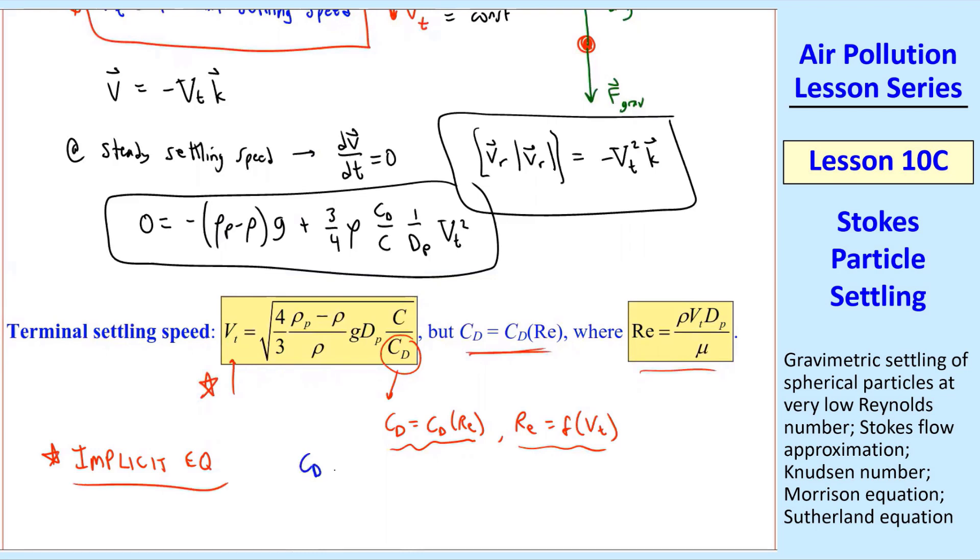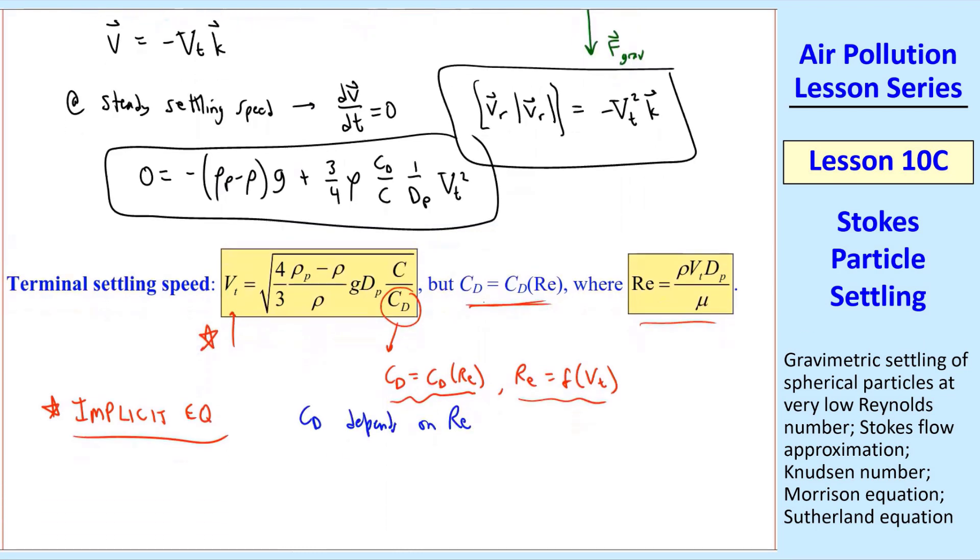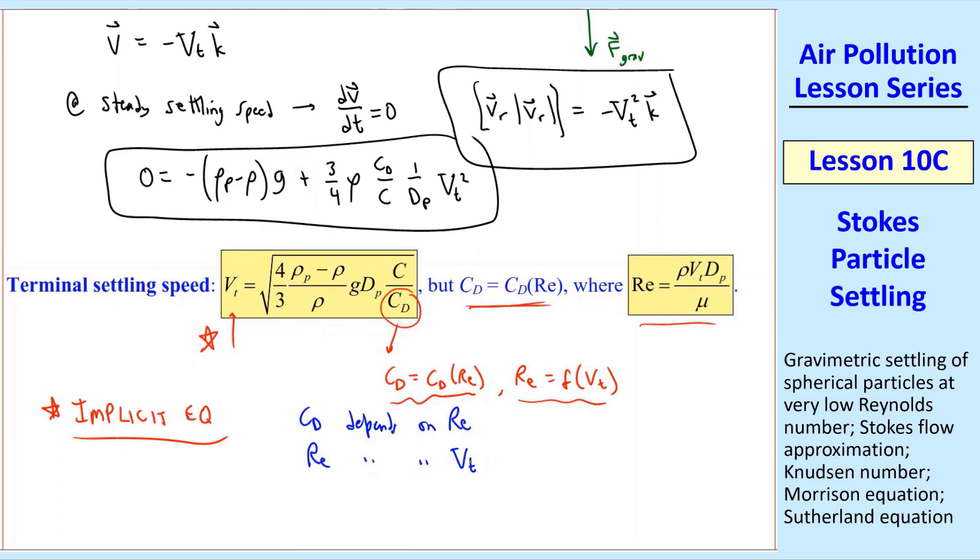So the flow is this. cd depends on Reynolds number. Re depends on vt, and vt depends on cd, so you find yourself in a situation where you have to do some kind of iteration to solve for this. I will show you that next time.